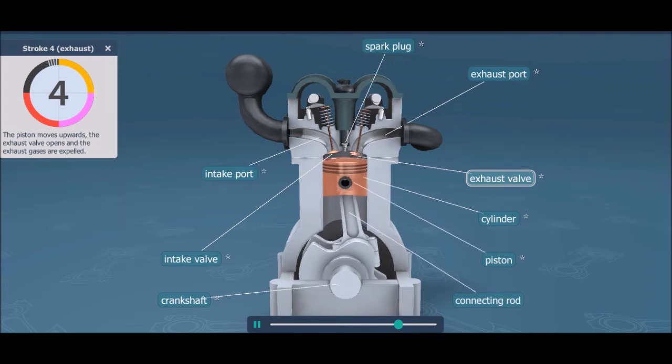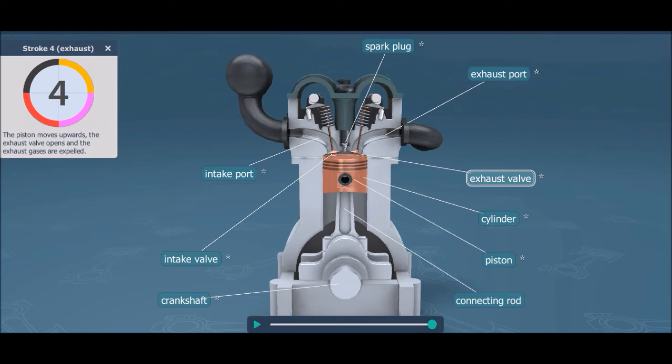The exhaust valve opens during this stroke, and the inertia of the flywheel and other moving parts push the piston back to TDC, forcing the exhaust gases through the open exhaust valve at the end of the exhaust stroke.